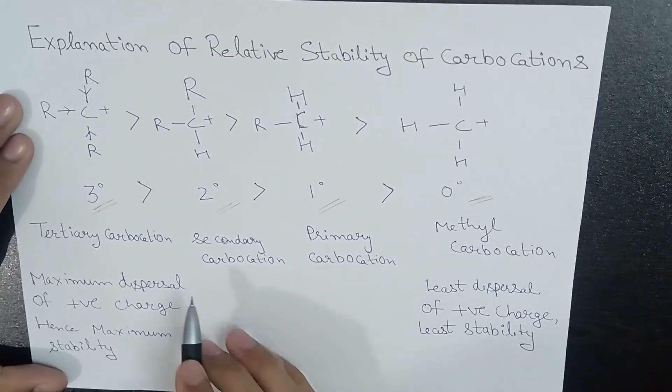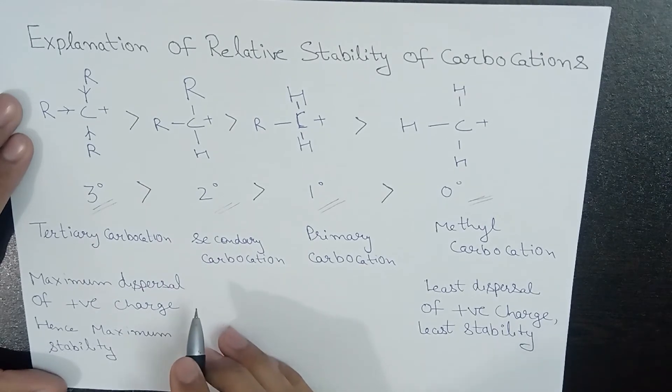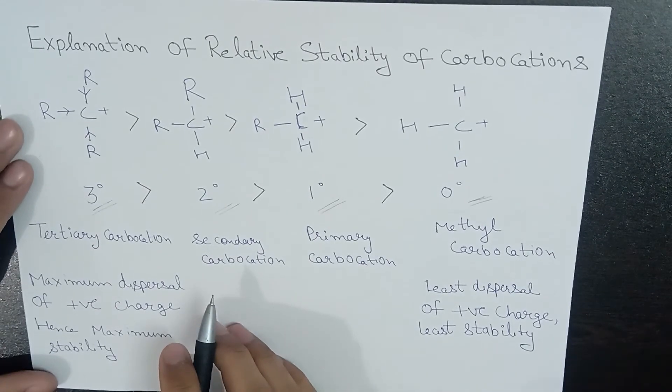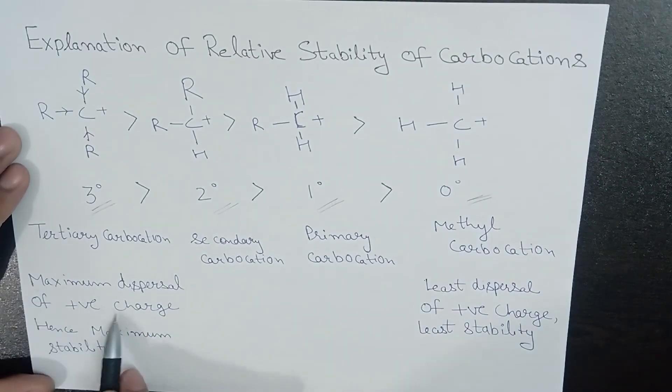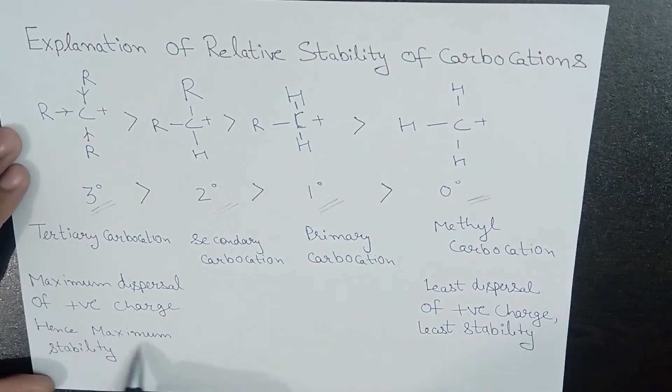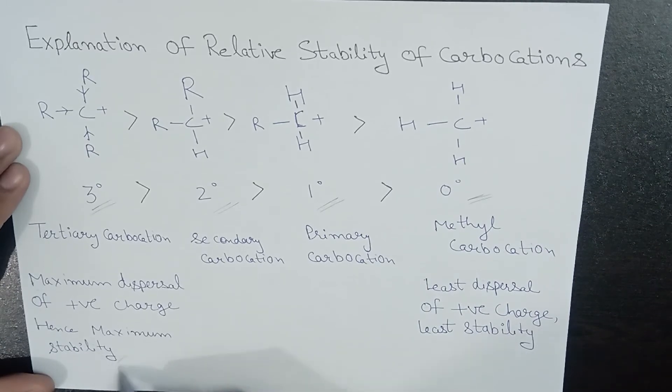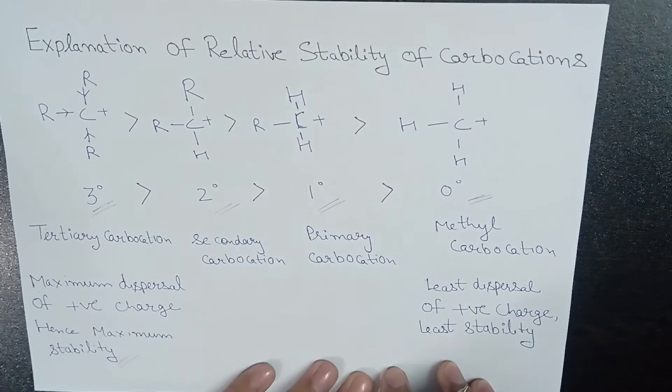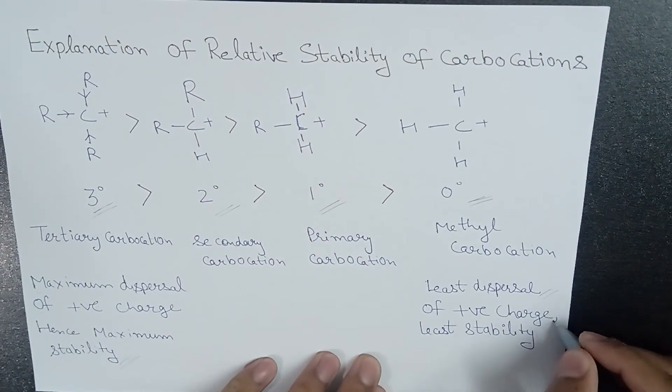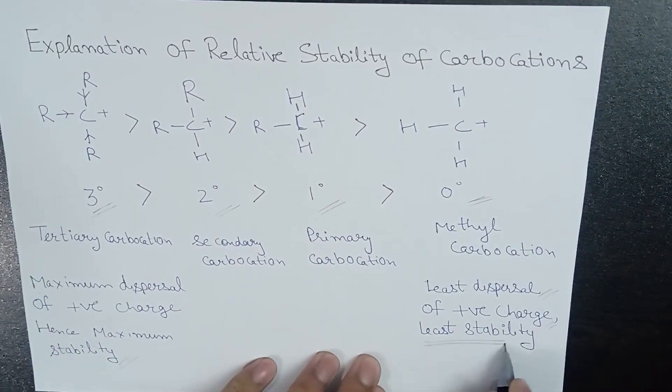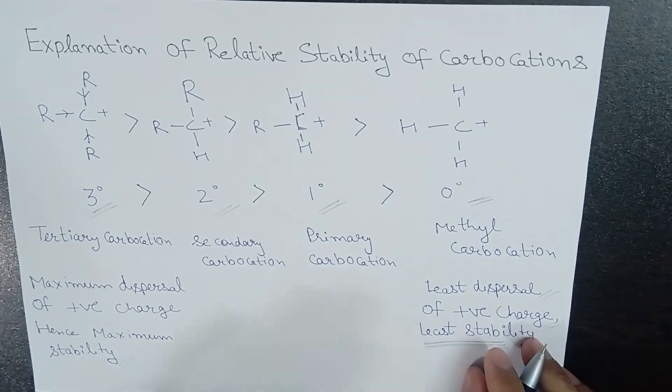Why is tertiary carbocation considered the most stable? Because maximum dispersal of positive charge takes place and hence attains maximum stability. Whereas methyl carbocation or 0 degree carbocation has less dispersal of positive charge and hence they are considered the least stable.